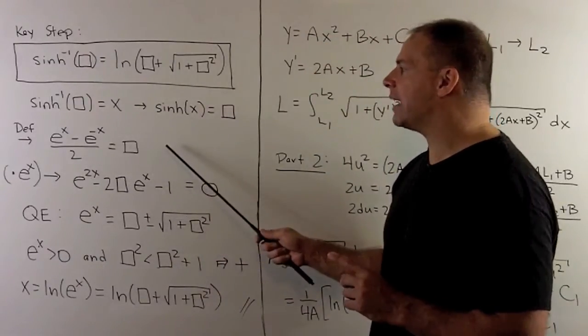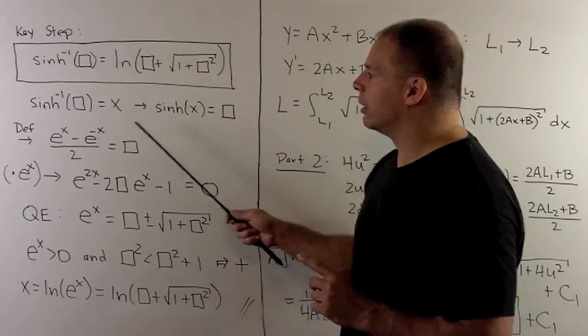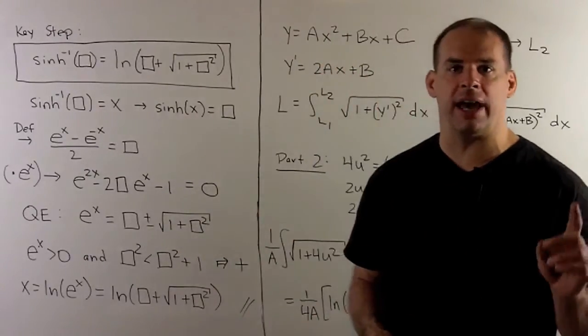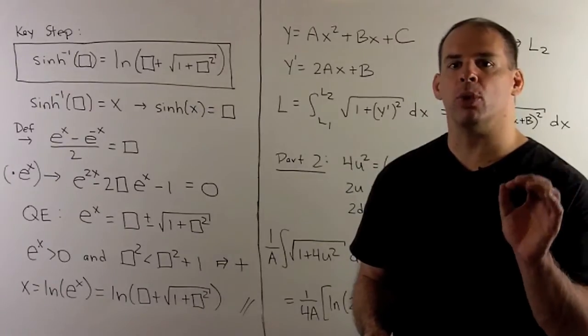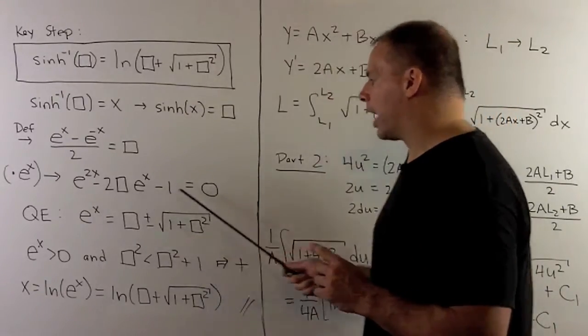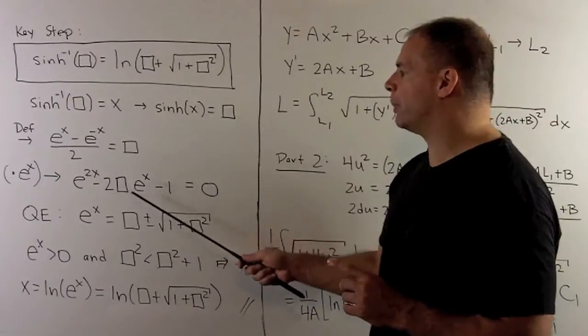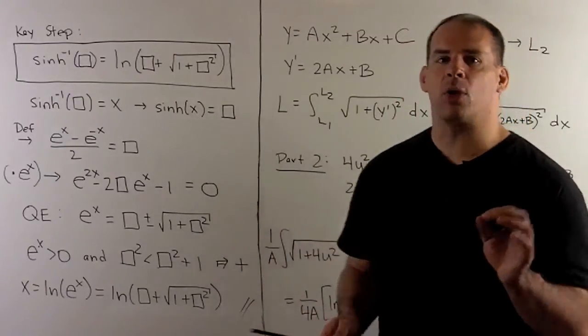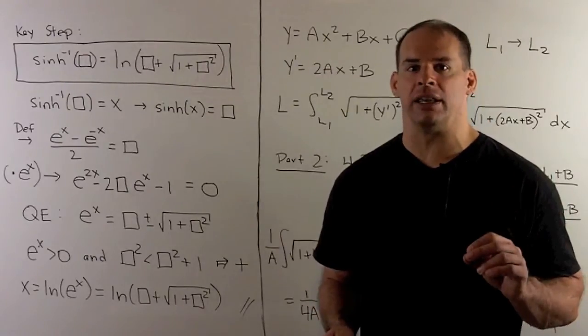I'll push the 2 to the other side. We'll take the 2 box, put it back on this side, and I multiply through by e to the x. That'll remove the e to the minus x. That's going to give me this quadratic. So, I have e to the 2x minus 2 box e to the x minus 1 equals 0. We can apply the quadratic equation to solve for e to the x.